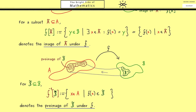Before we go to an example I should alert you to possible confusion: this power minus 1 does not imply that we have an inverse map — we will talk about that later. The superscript −1 is just a reminder that the input set lies on the right hand side.